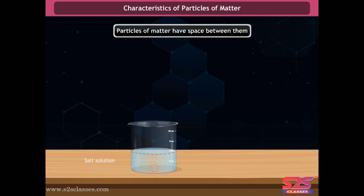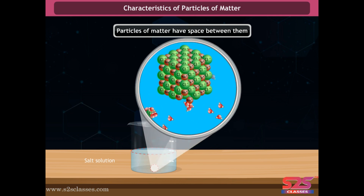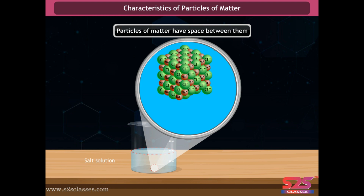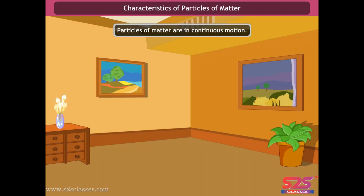It was observed that the particles of salt were evenly distributed in water, and the presence of salt particles did not change the level of water in the beaker. This could be possible only if the particles of salt were accommodated in between the water particles. Thus, this clearly demonstrates that space exists between water particles.